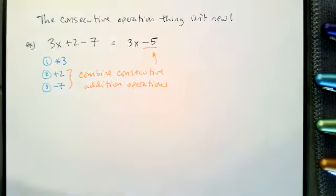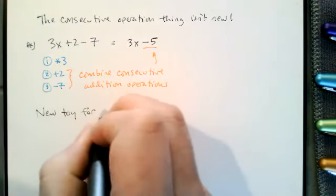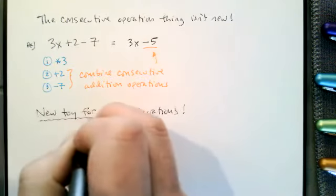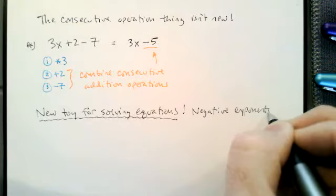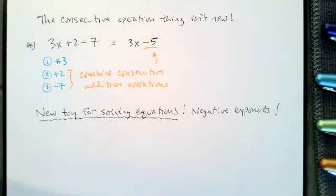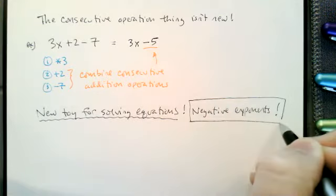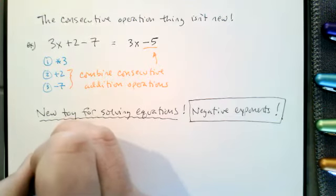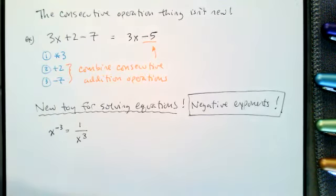Here's the new thing. Our new tool when solving equations is going to be negative exponents. We just barely introduced the concept of negative exponents, so let's write down a few statements. If we have x to the negative 3, we can write this as 1 over x to the third — a negative exponent in the numerator is a positive exponent in the denominator.